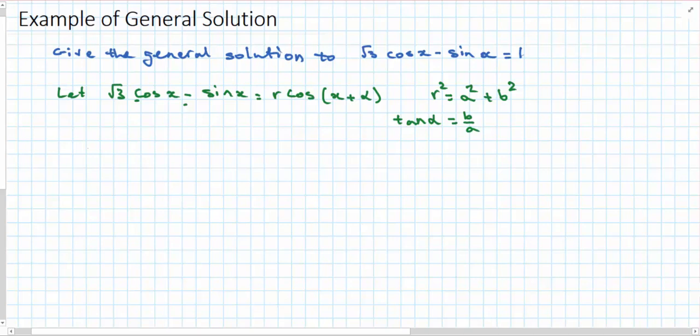So my r is going to be √3 squared plus 1 squared, that would be r squared, which gives me an r value of 2. And my tan alpha is going to be 1 over √3.